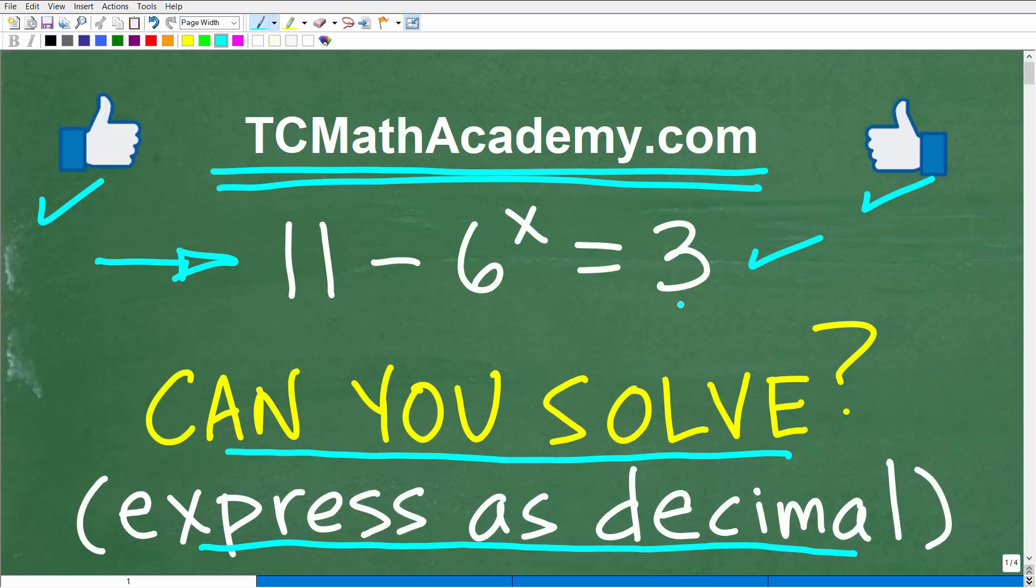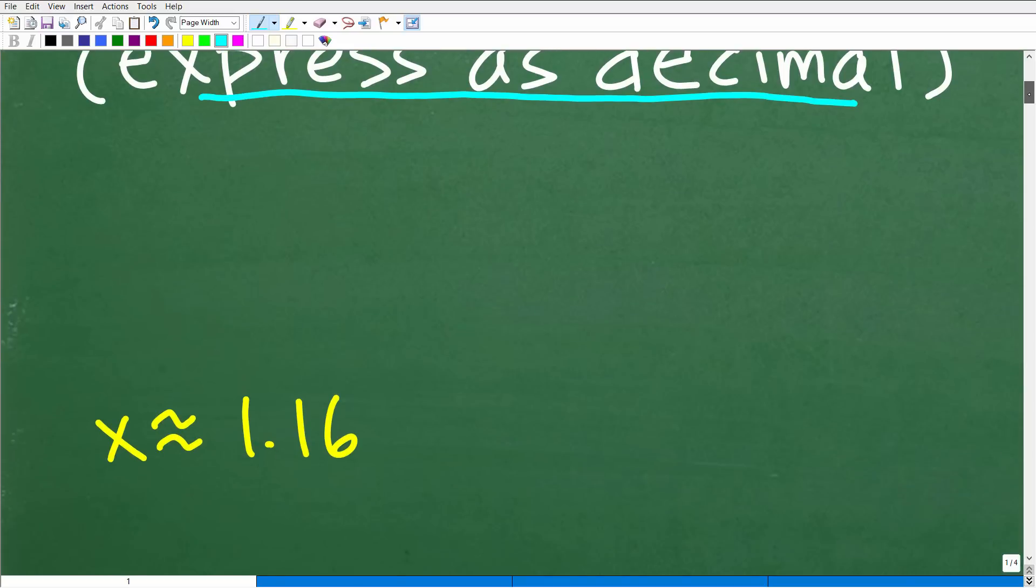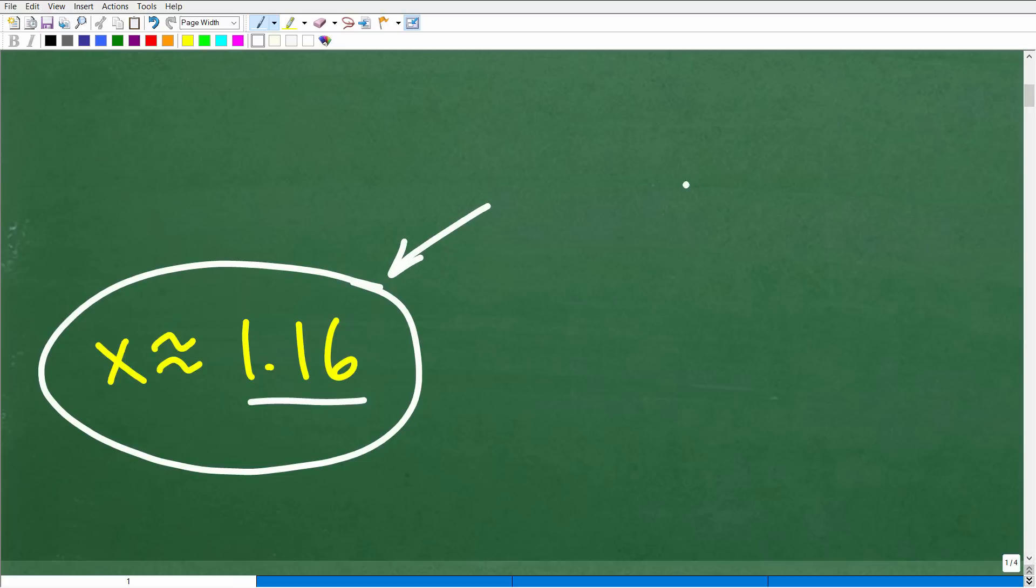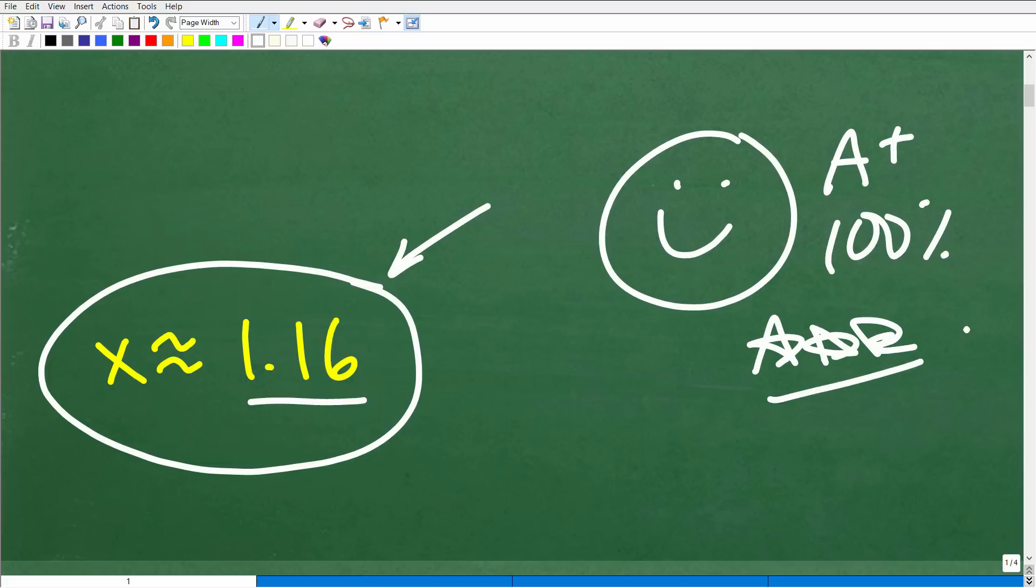Okay, so 11 minus 6 to the x is equal to 3. Again, we're trying to solve for x, and this is definitely a problem where you'll need your calculator. So let's take a look at the answer. I'm going to express the solution as a decimal, and here it is. So x is approximately 1.16. Of course, I'm rounding this off, but this is good enough. So how'd you do? Well, if you got this right, that is fantastic. Matter of fact, I'm going to give you a nice little happy face and A plus, 100% and multiple stars. You can tell your friends and family that you know a thing or two about solving exponential equations.